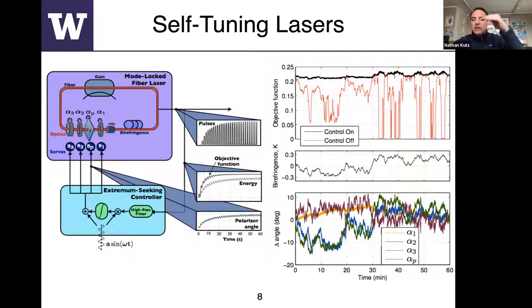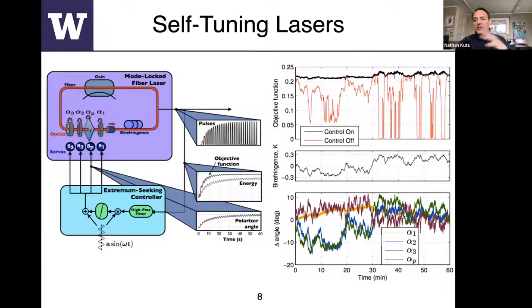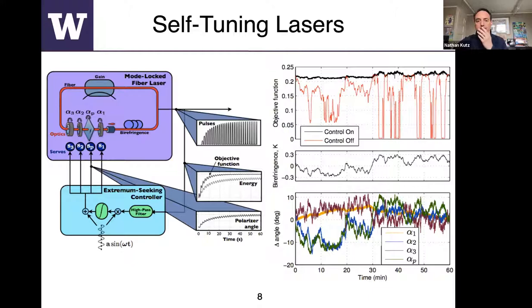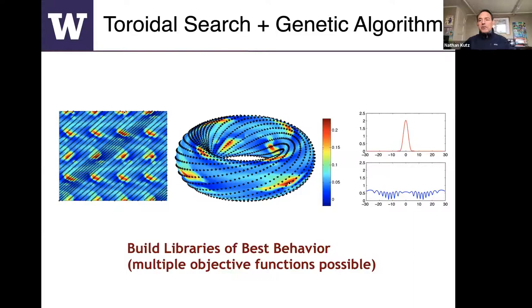When we turn the extremum seeking controller on — giving it access to modulating the wave plates and polarizers to create a local gradient — it self-tunes: creating a local gradient, walking up into a mode-lock state, and as the birefringence changes, adjusting the wave plates and polarizers to keep it mode-locked. The black line shows the controlled case: the mode-locked laser cavity is now completely stable despite the wandering birefringence.